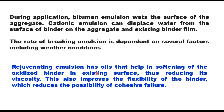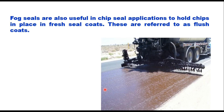Rejuvenating emulsion has oils that help in softening of the oxidized binder in the existing surface, thus reducing its viscosity. This also improves the flexibility of the binder, which reduces the possibility of cohesive failure. This may be beneficial in situations where the surface has an open texture and the existing binder has become hard and brittle due to aging.